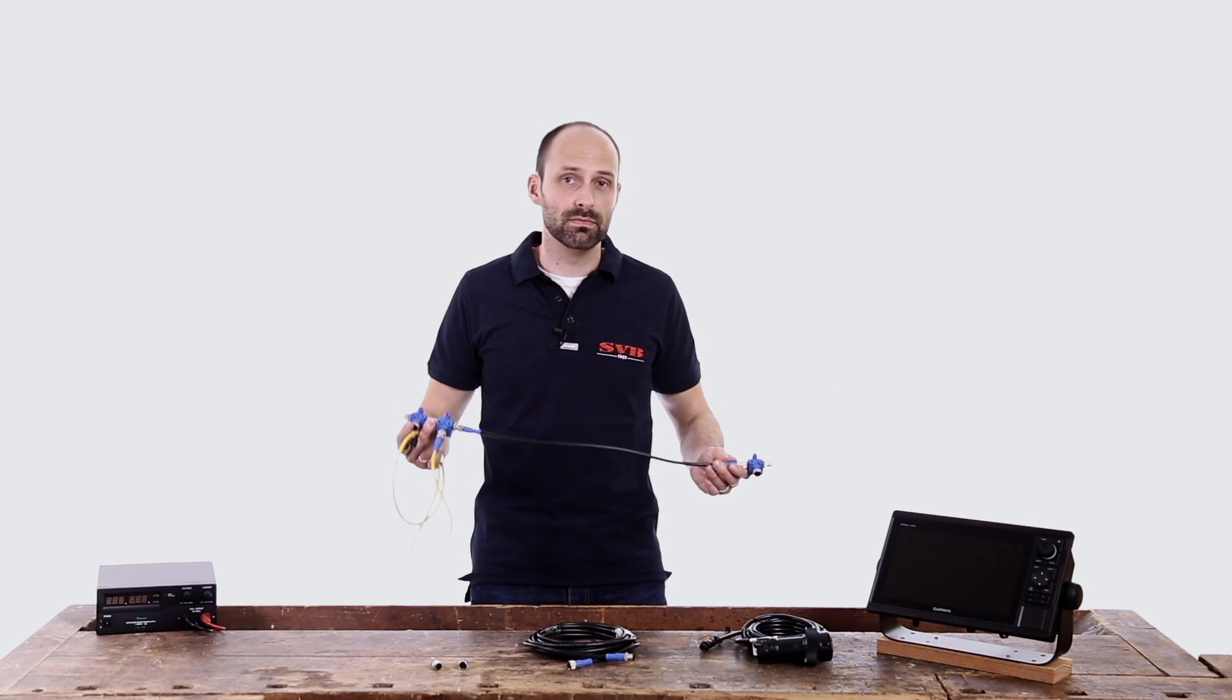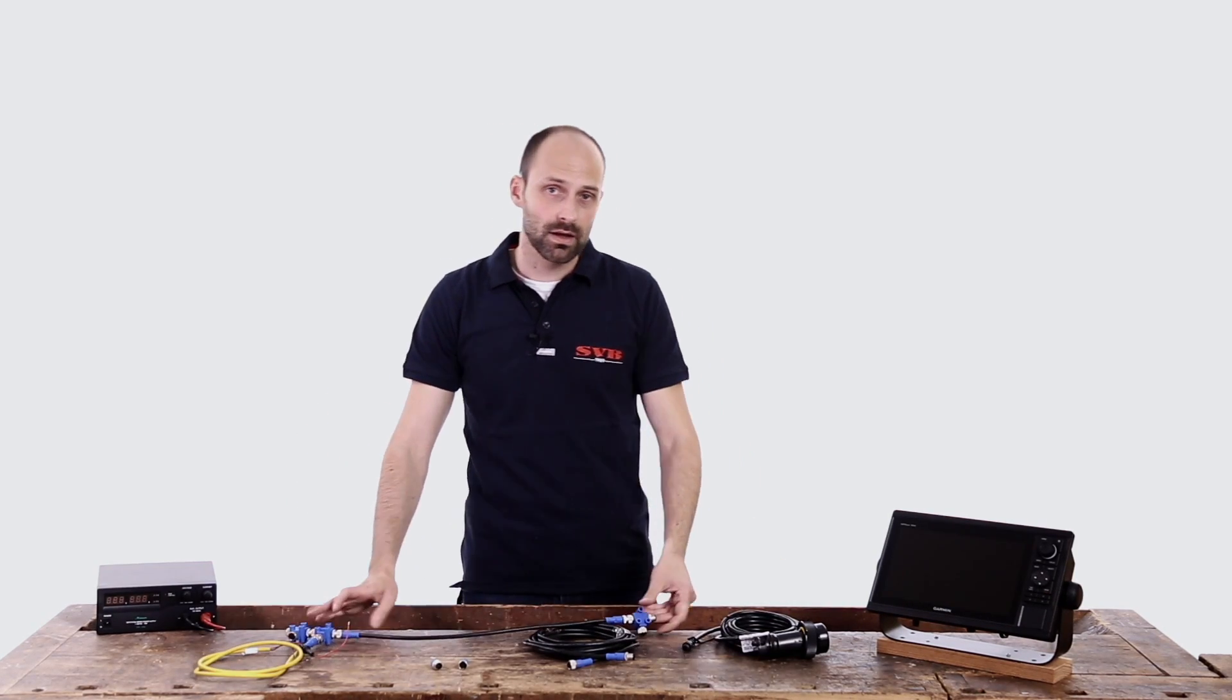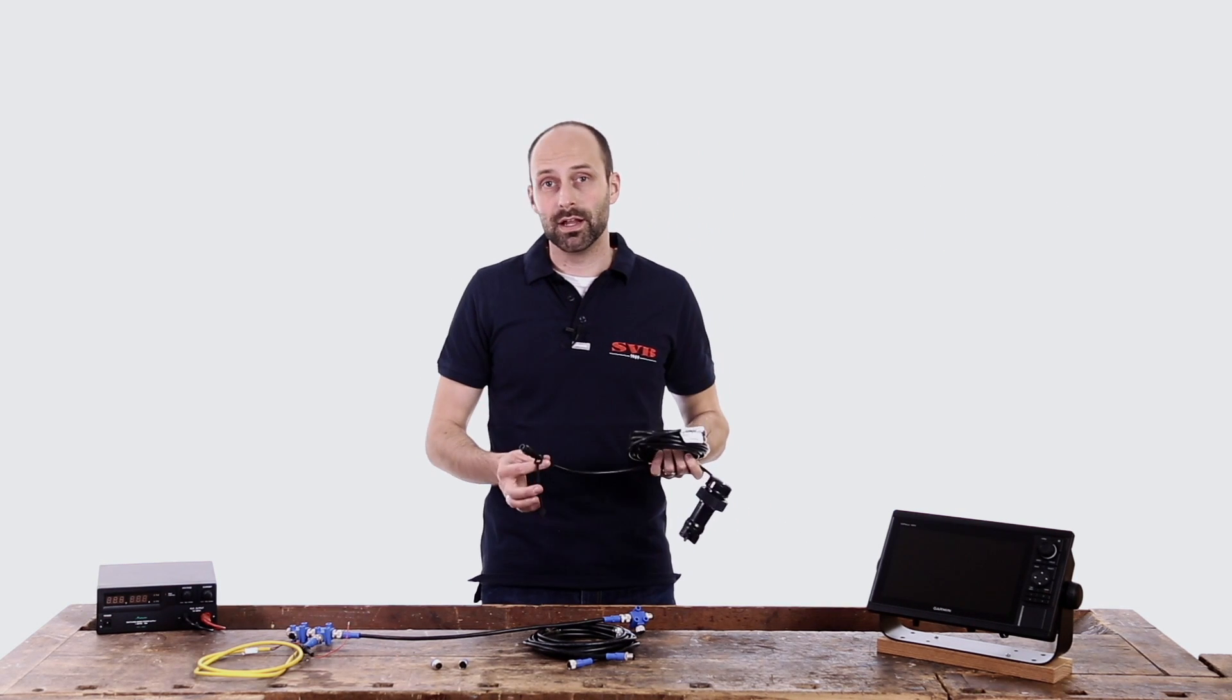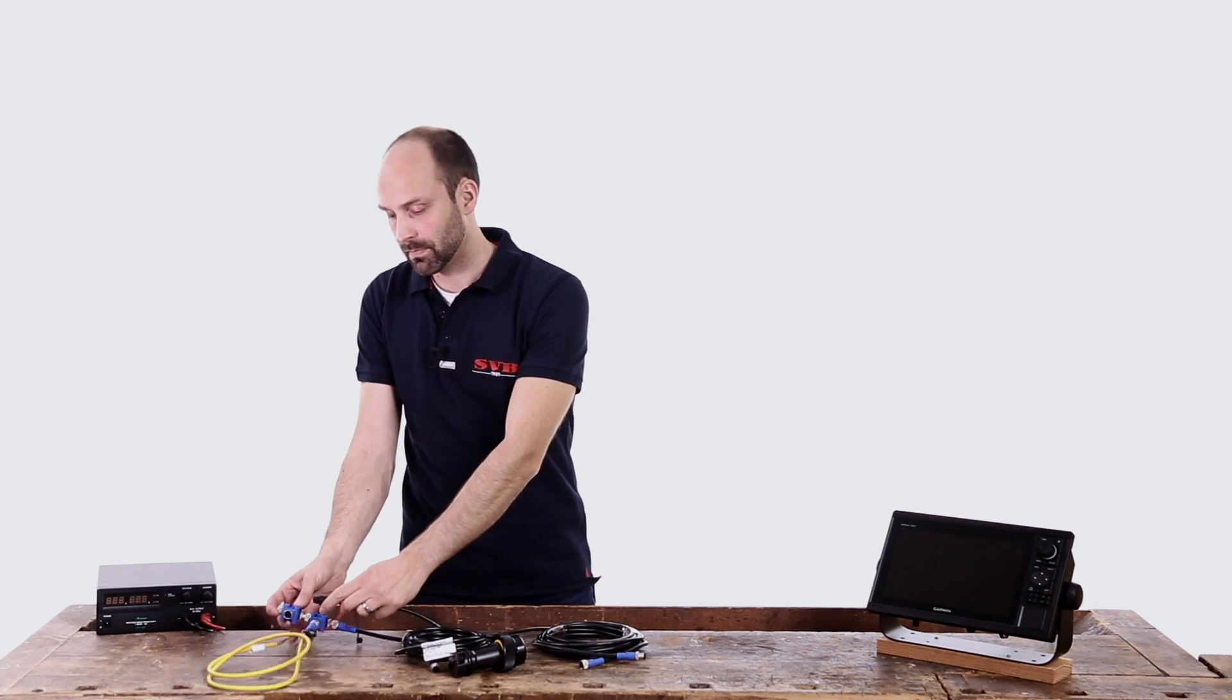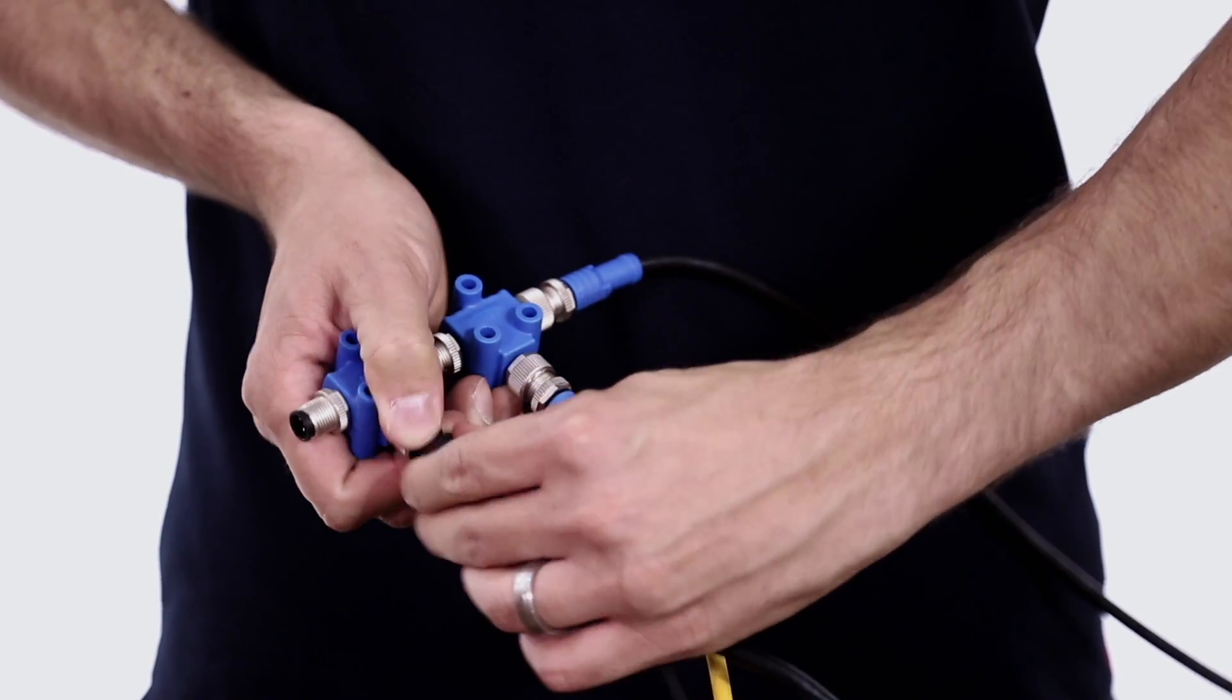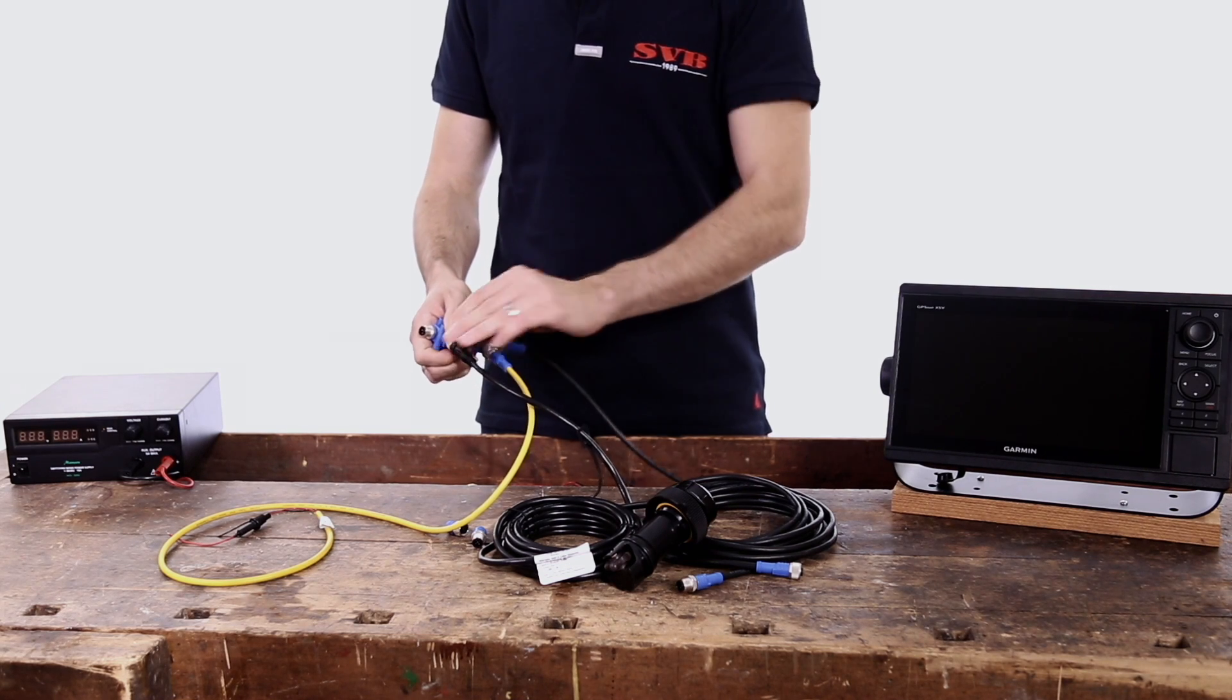In the next step we will connect the MRDST800 transducer to our backbone. We simply connect the transducers Micro-C cable to a 3T piece on our backbone. Small devices such as the DST800 transducer or small instrument displays do not require their own power supply as they receive enough power from the 12 volt supply to the NMEA2000 backbone.